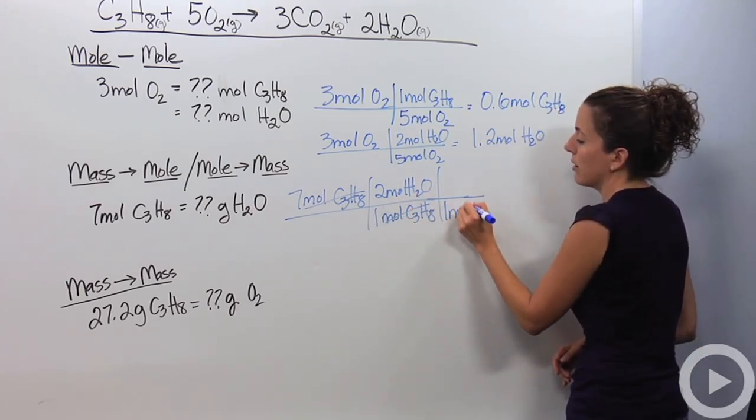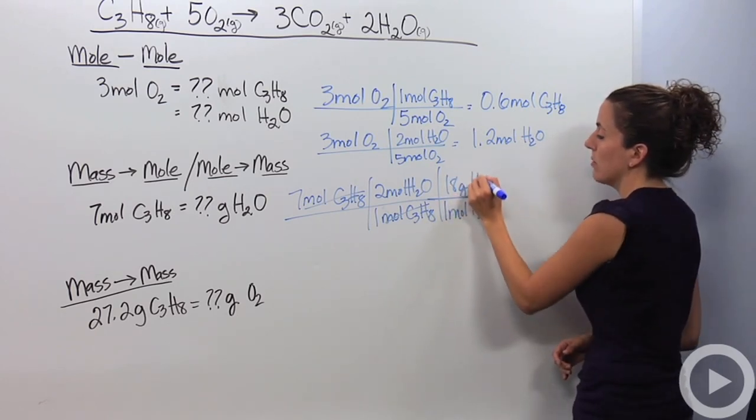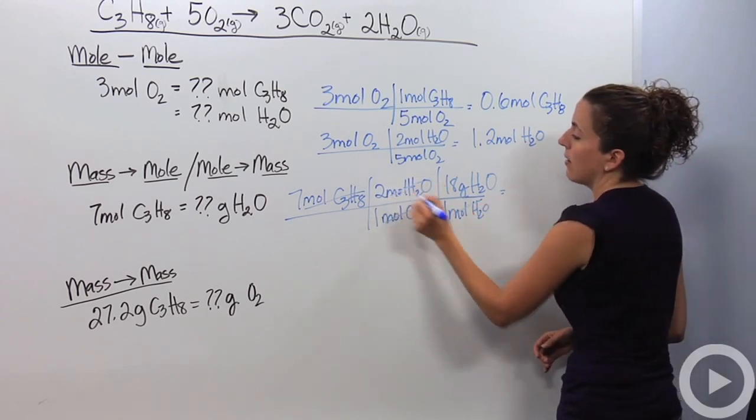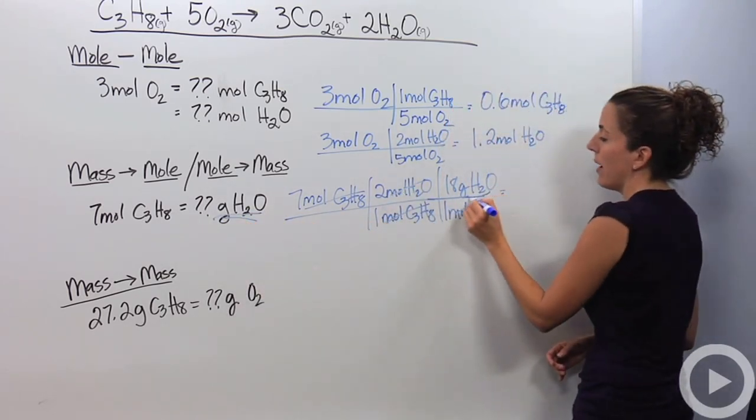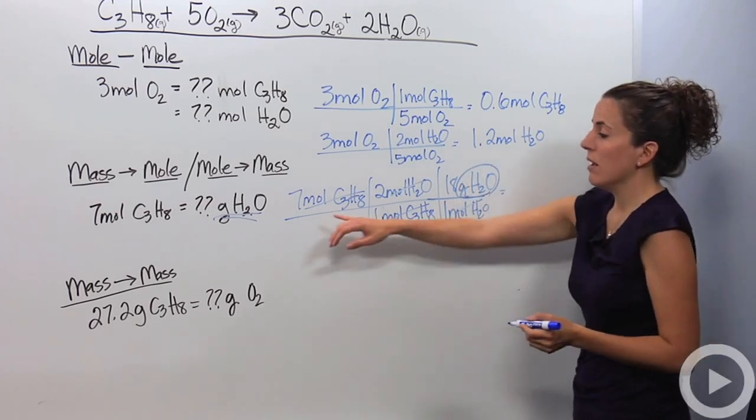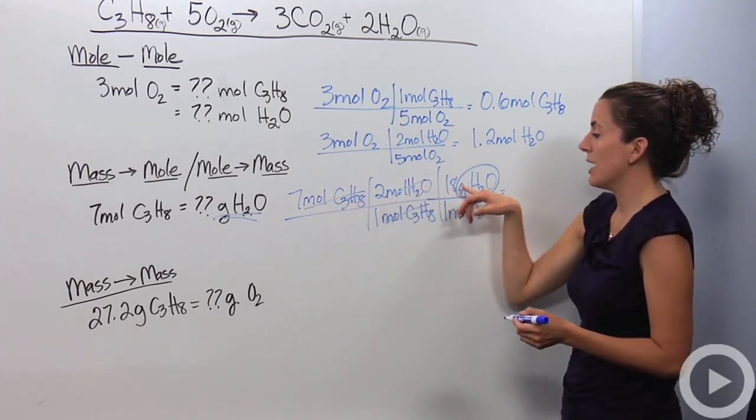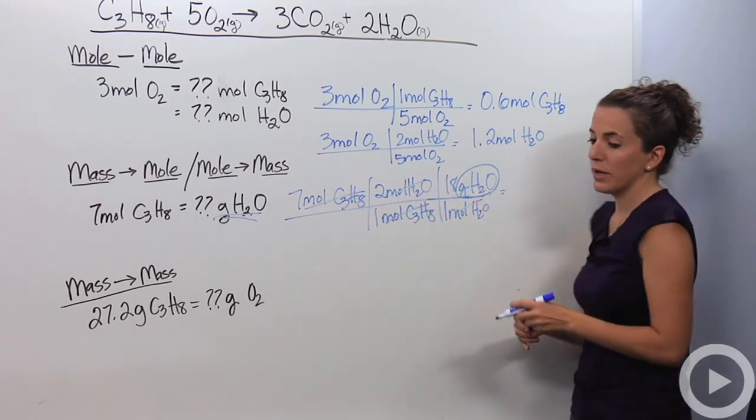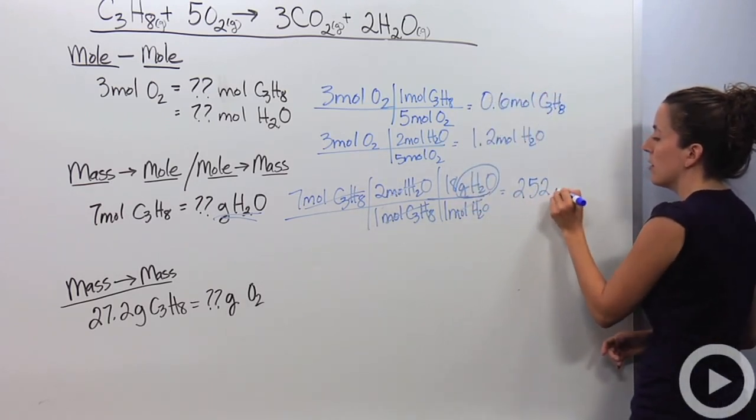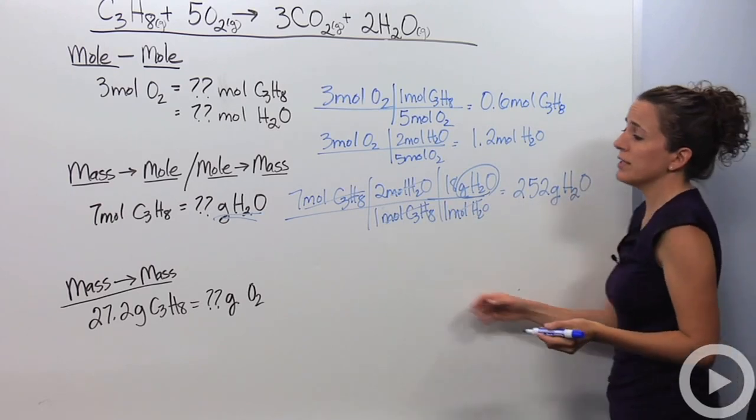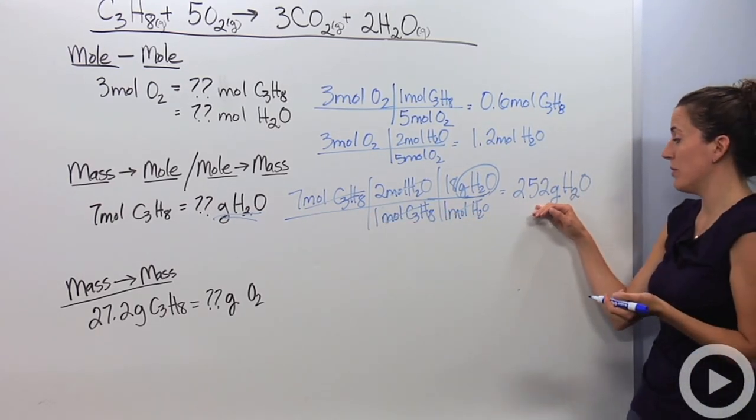I know that 1 mole of water is 18 grams from looking at my periodic table. I can cross these out because one's on top, one's on bottom. The question asks me for grams of water. I end in grams of water so I can stop here. I can multiply whatever's on top and divide whatever's on bottom. So 7 times 2 times 18 divided by 1 divided by 1 is going to give me 252 grams of water.